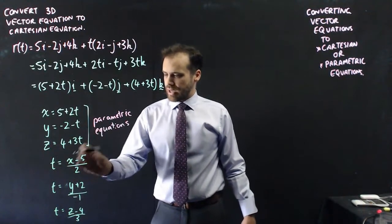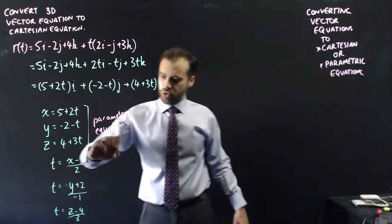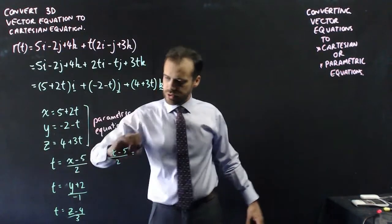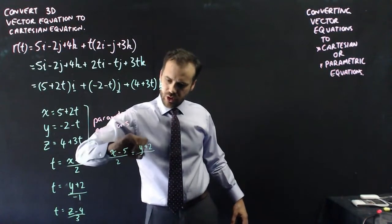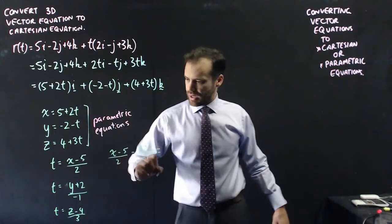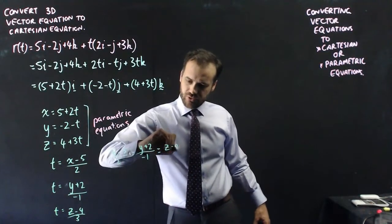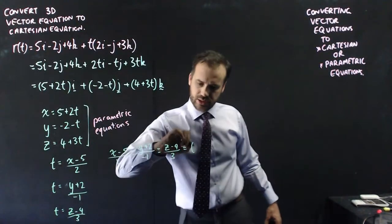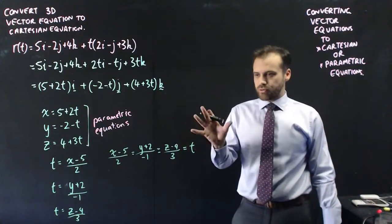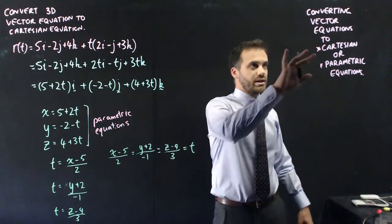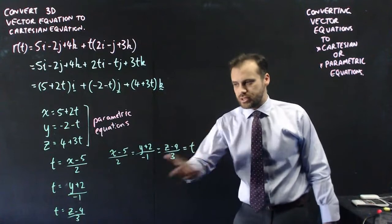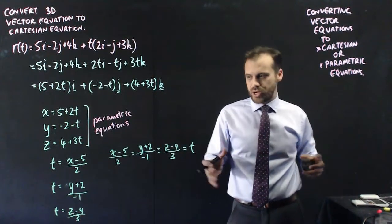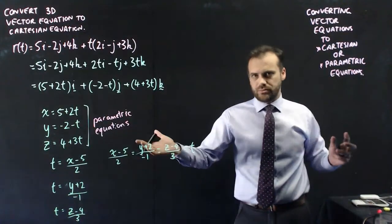So after that, we can now say that, and this is what our Cartesian form is going to look like: x minus 5 over 2 equals y plus 2 over negative 1 equals z minus 4 over 3 equals t. And this is what we refer to when we refer to a Cartesian equation of a line in three dimensions. You can't get a single Cartesian equation. You get this monstrosity.